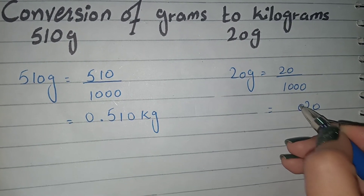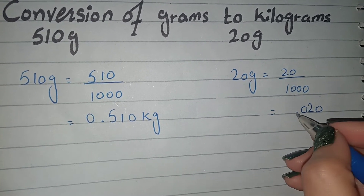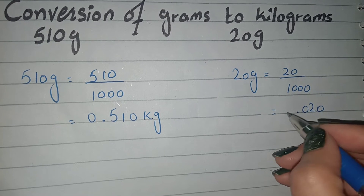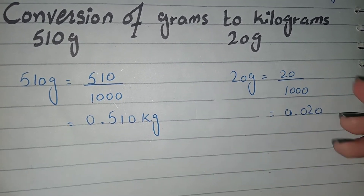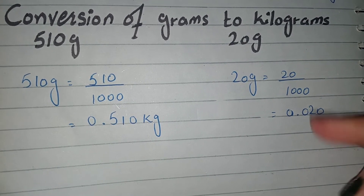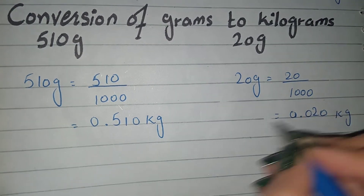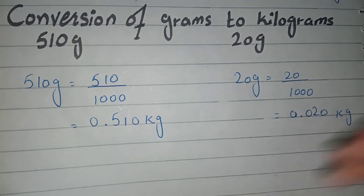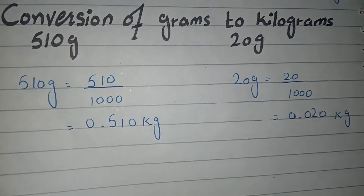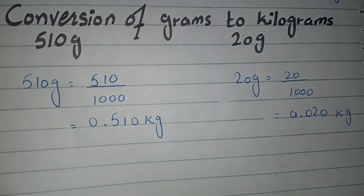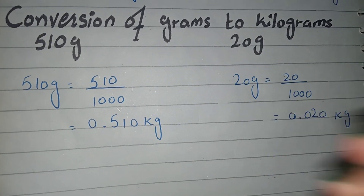So you can see three decimal places and three digits are accounted for. Dividing by 1000, 20 grams is converted to kg. If you like this video, like this channel and subscribe. Thanks for watching. Take care.